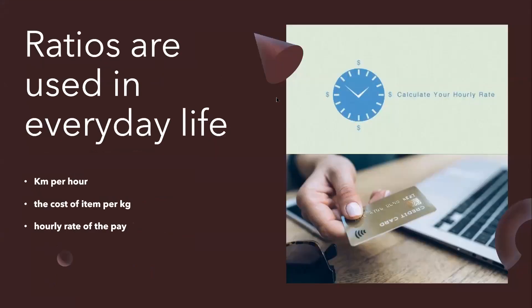Ratio is something that we use in everyday life. For example, comparing of units, like if I say kilometer per hour, I am comparing two things, right? The cost of item per kg, hourly rate of pay. This is something that we try to keep in touch every day. We study these ratios every day.